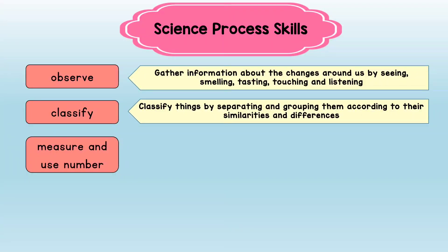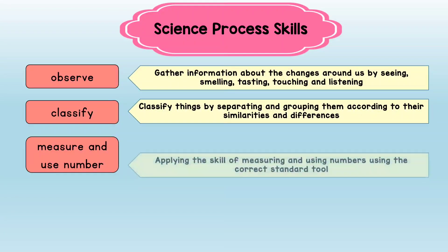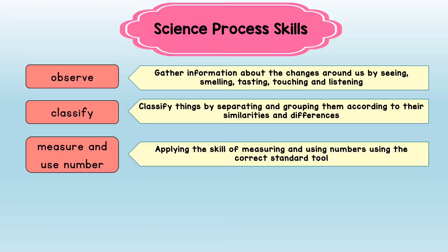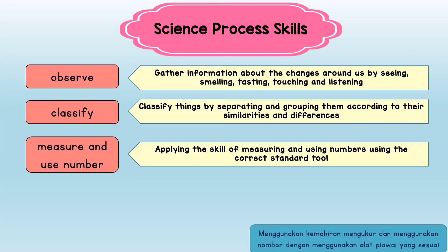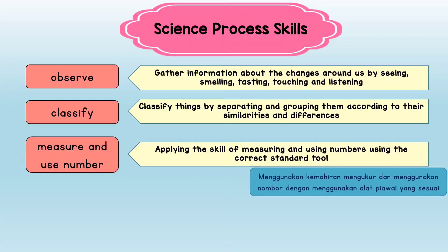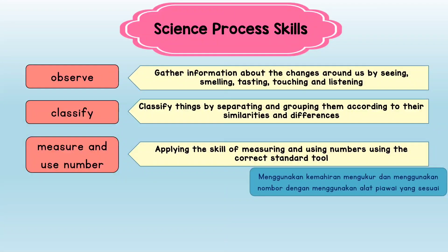The third science process skill is Measure and Use Number, which is applying the skill of measuring and using numbers using the correct standard tool.